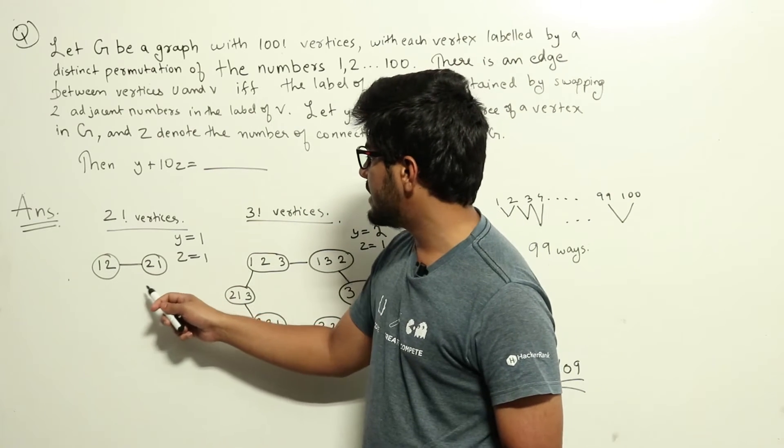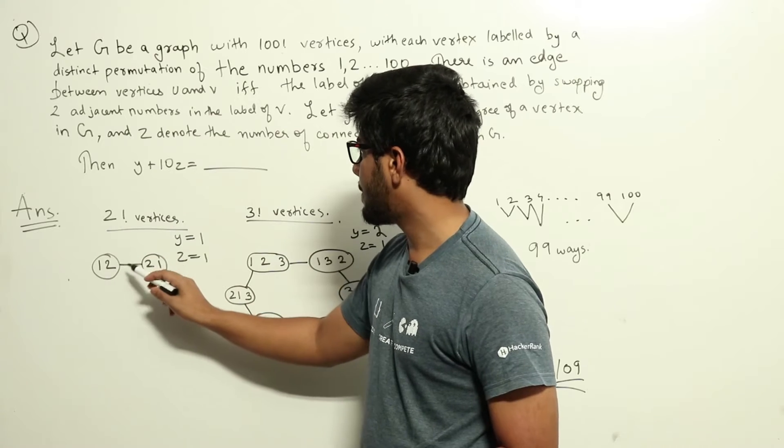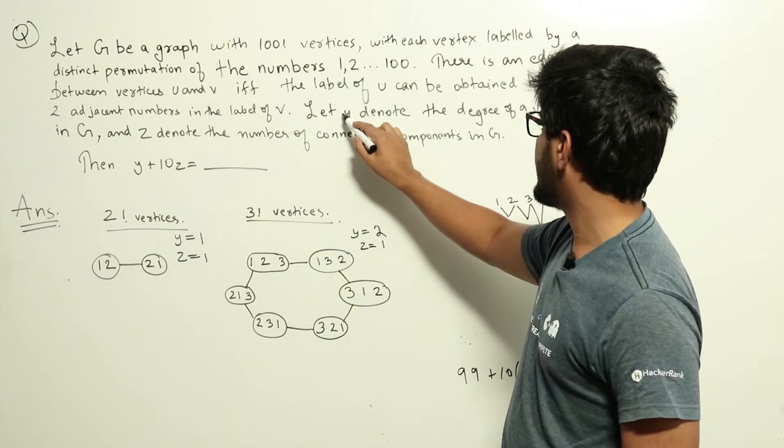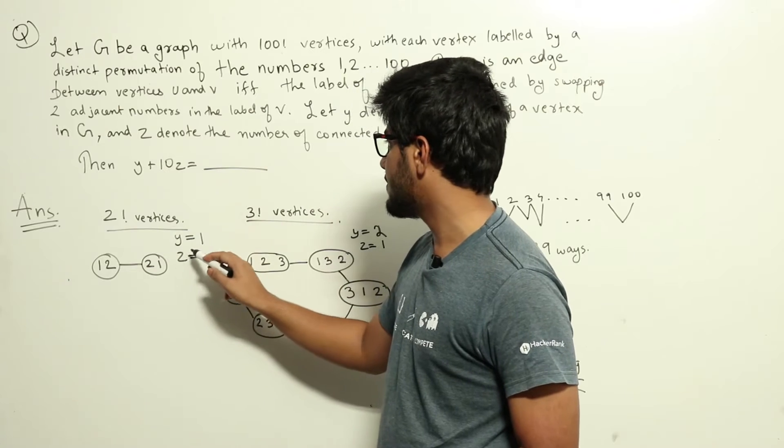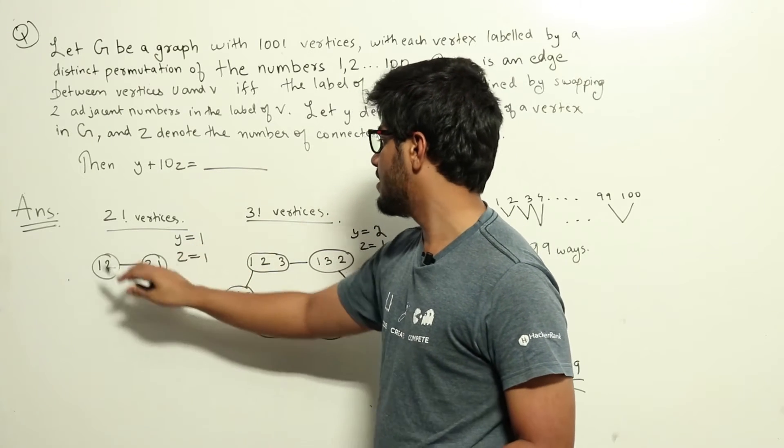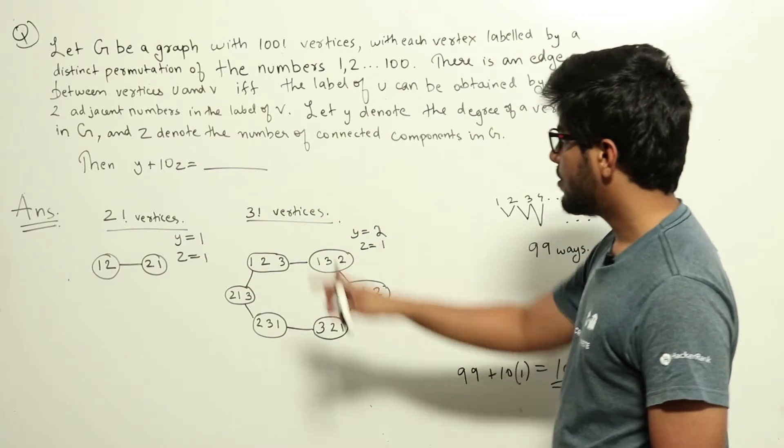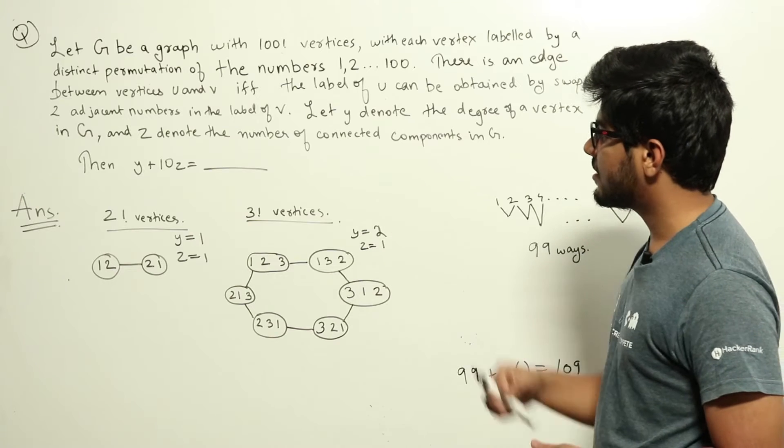So y is denoting the degree of each vertex and the number of connected components is also 1 which is z. This forms one simple connected component. So for this graph y is 1 and z equal to 1. Now let's try a graph with three factorial vertices.